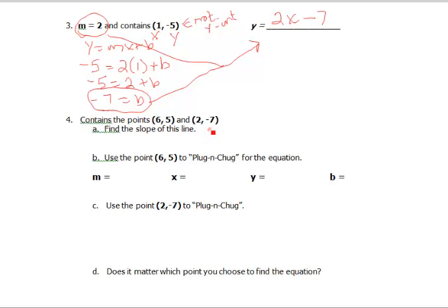So we're going to do our slope formula. Negative 7 minus 5, that's y2 minus y1, over 2 minus 6, x2 minus x1.